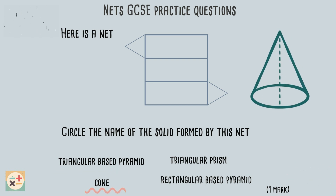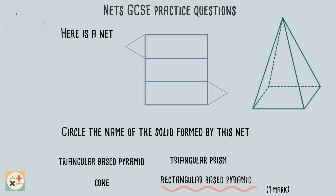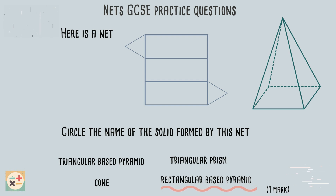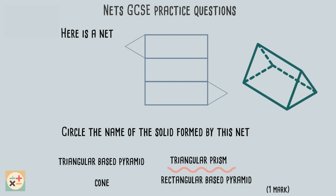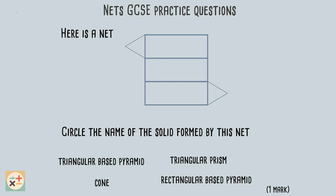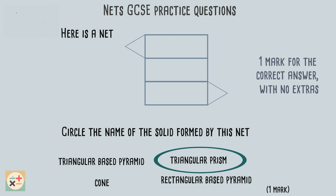We can clearly see the net does not contain a circular face as the cone does, so we know this isn't the correct answer. The rectangular based pyramid does contain a rectangular face, but as there is only one of these, this doesn't match the net we are given. However, we can see that the triangular prism has three rectangular faces along with two triangular faces at either end. This matches the net we have been given and is therefore the correct answer. This question is worth one mark, which is given for the correct answer with no other answers circled.